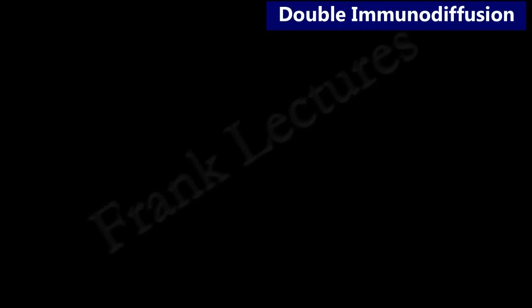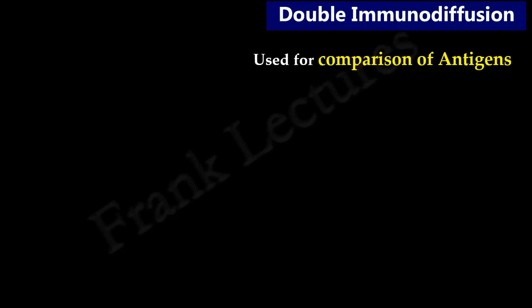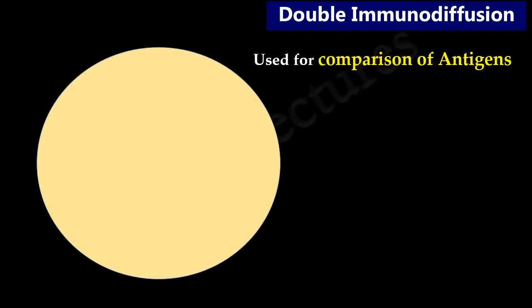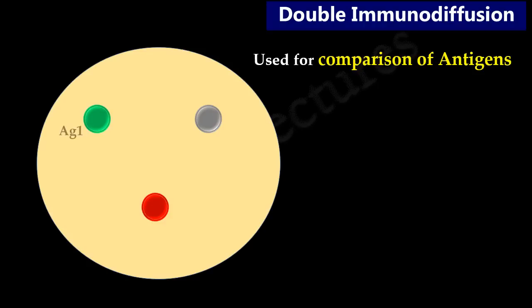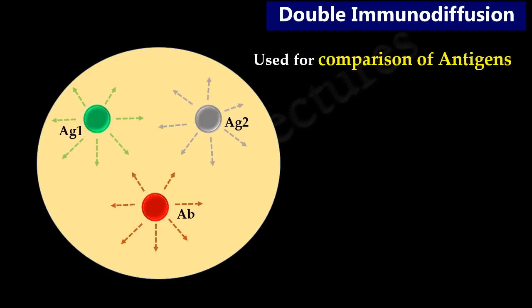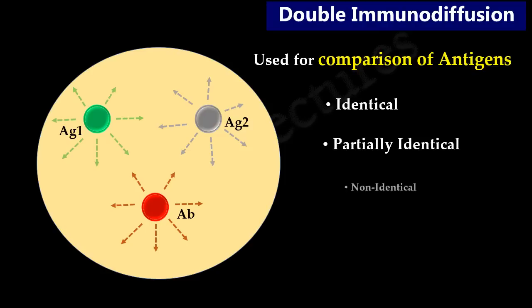This technique is mainly used for the comparison of antigens. Consider an agar plate with three wells cut out such that a triangle is formed. In the green well we add a first antigen, in the grey well we add a second antigen, and in the red well we add antibodies. After some time, both antigens and antibodies will diffuse from their wells in all directions and towards each other. The pattern of precipitation lines tells whether the given antigens are identical, partially identical, or non-identical.